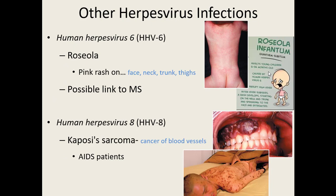HHV-7 has some unknowns and we know it causes some skin infections but not completely sure how, so we won't cover it. HHV-6 causes a condition called roseola. Based on its name, it causes a pink rash on the face, neck, trunk, and thighs — kind of right down the midline of the body. That pink is a rose color, which is where it gets its name.